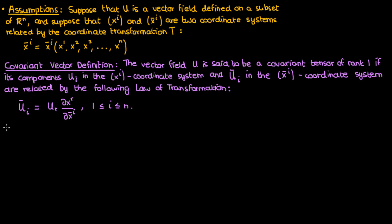The key difference between this transformation law and the law for contravariant vectors is that the order of the partial derivatives is switched. So when we're converting from the unbarred system to the barred system, we're multiplying by the derivative of the unbarred coordinate with respect to the barred coordinate, instead of the derivative of the barred coordinate with respect to the unbarred coordinate. Another difference is that we're using subscripts instead of superscripts for indexing, because these are covariant components — the v points down.